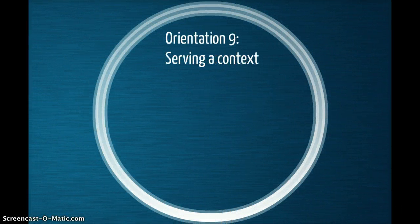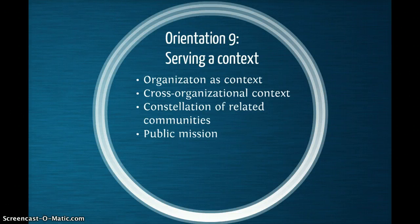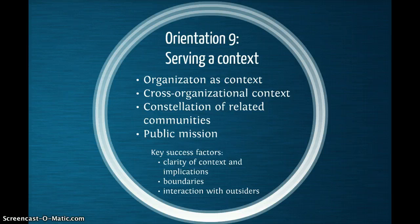Finally, there's Orientation 9: serving a context. This is central to a community's identity. It includes organization as context, cross-organizational context, the constellation of related communities, interaction with other communities, and a public mission. Signs of life include that community members are engaged in their mission. Key success factors include clarity on community context and its implications, recognized and supported boundary roles that serve the orientation to context, and interaction with outsiders.